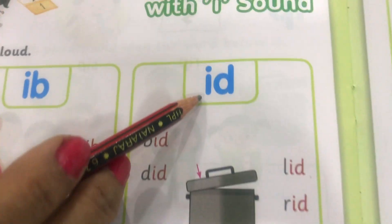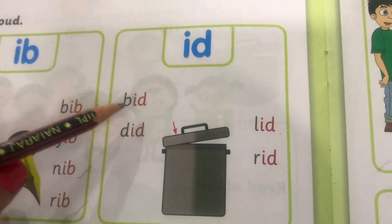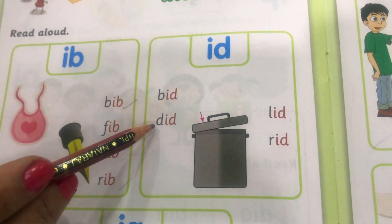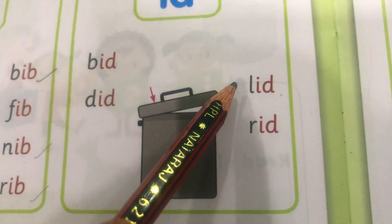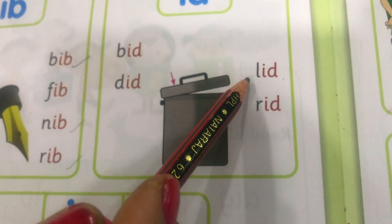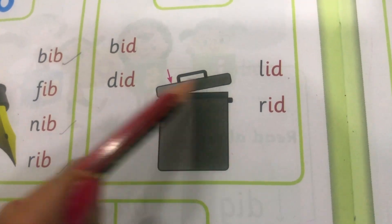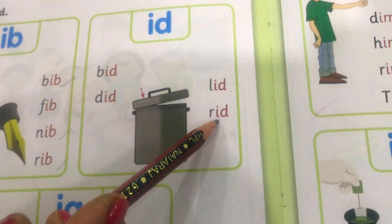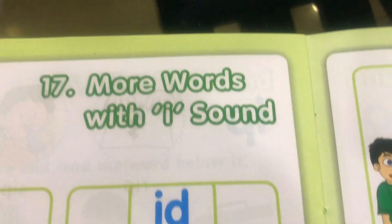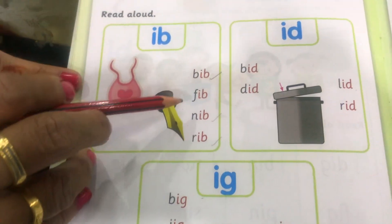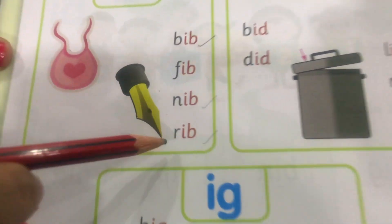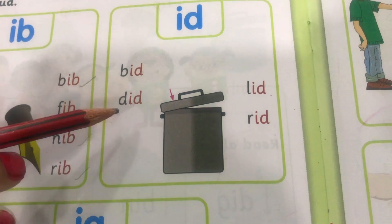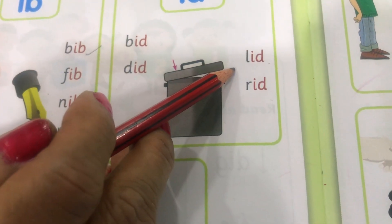Now this is -ID. When we join B to -ID it becomes B-I-D, 'Bid'. L-I-D is 'Lid' — 'Lid' means the cap of a tin. R-I-D is 'Rid'. Let's revise: B-I-B 'Bib', F-I-B 'Fib', N-I-B 'Nib', R-I-B 'Rib'. B-I-D 'Bid', D-I-D 'Did', L-I-D 'Lid', R-I-D 'Rid'.